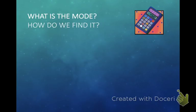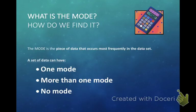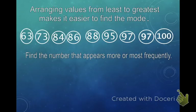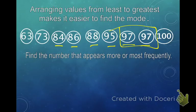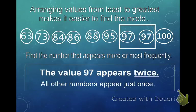What about the mode? The mode is the easiest one — by all means, the easiest one. We want to make sure the data is in order from least to greatest. The mode is the value that occurs the most often, or the most frequently. A set of data can have one mode, more than one mode, or no mode. So we arrange the numbers from least to greatest — it makes it much easier to find the mode. Looking at our test scores: 63, 73, 84, 86, 88, 95 — and we've got two 97s. The value 97 appears twice; all other numbers appear once. So the mode is 97.